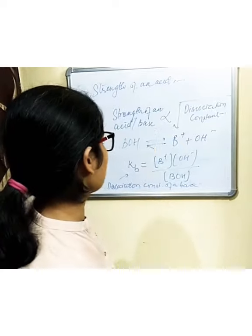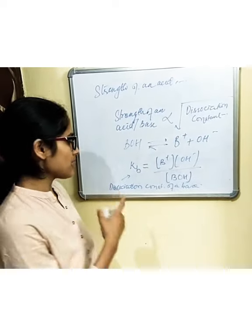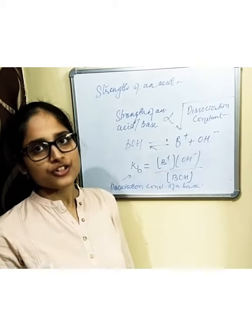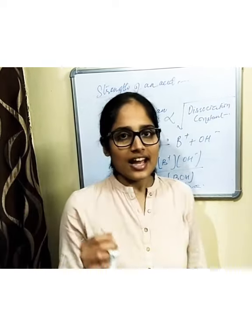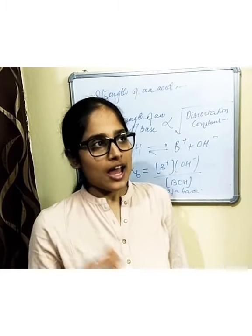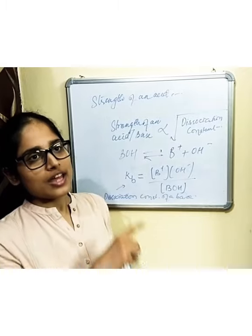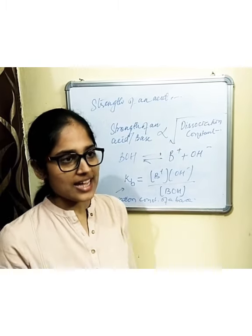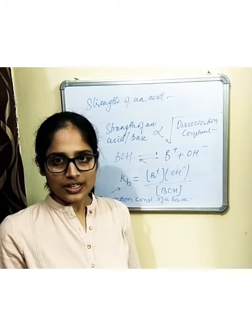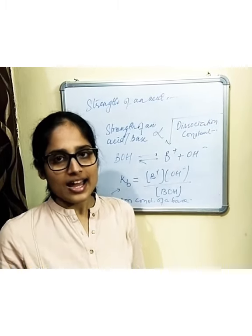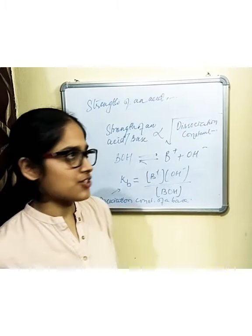Based on the Ka and Kb values, weak acids have smaller Ka values whereas strong acids have larger Ka values. Similarly, the Kb value for weak bases is small and the Kb value for strong bases is large.